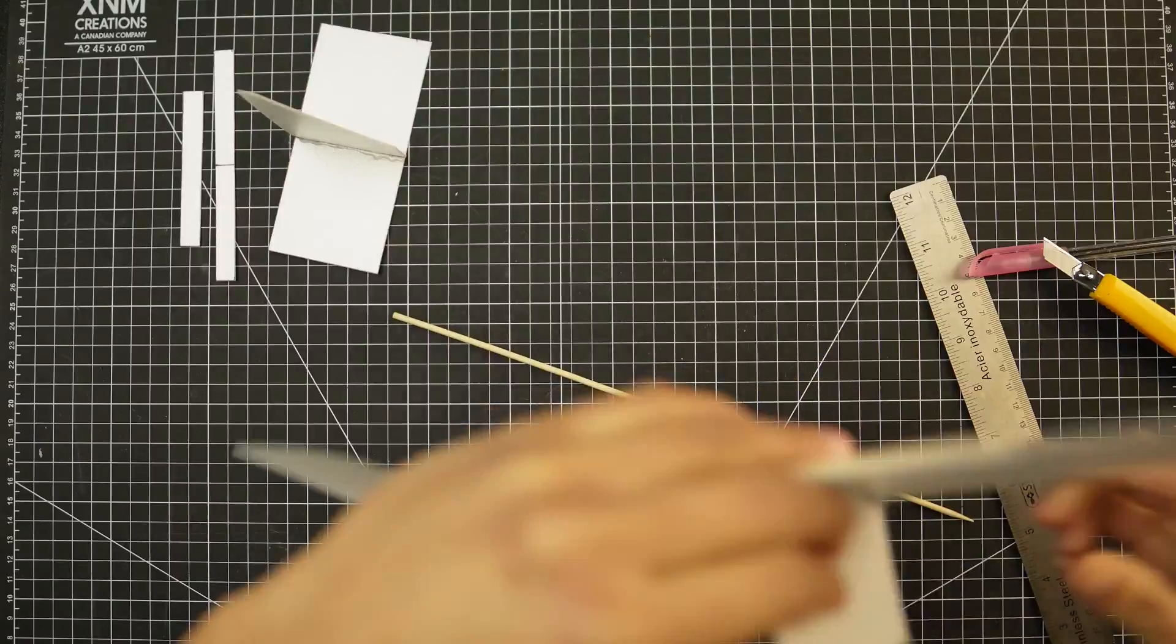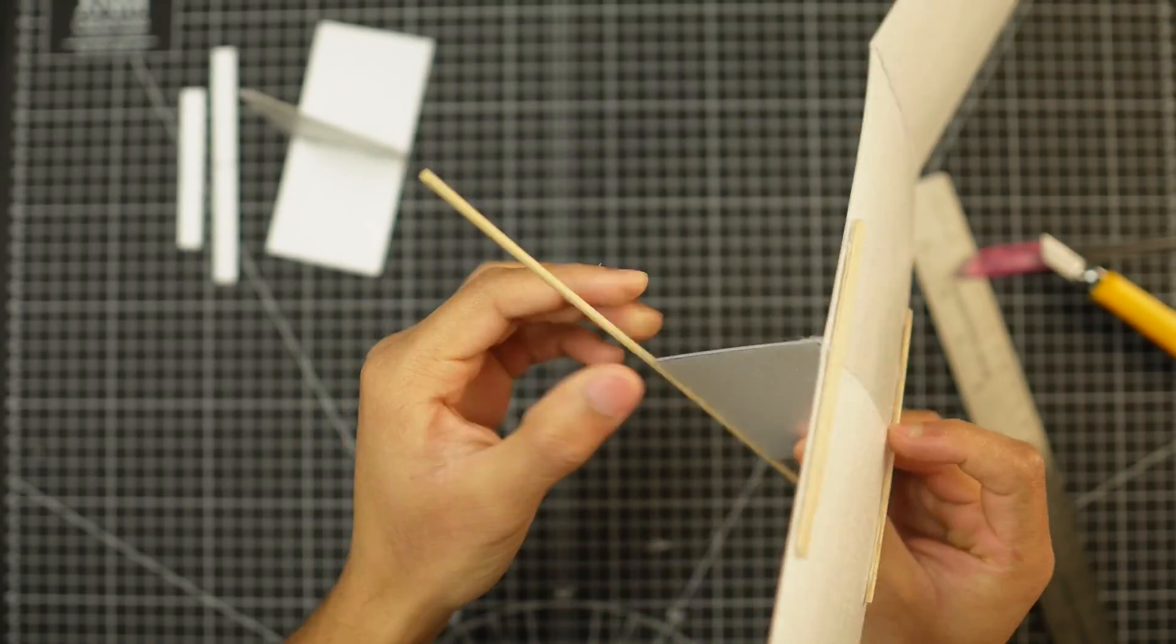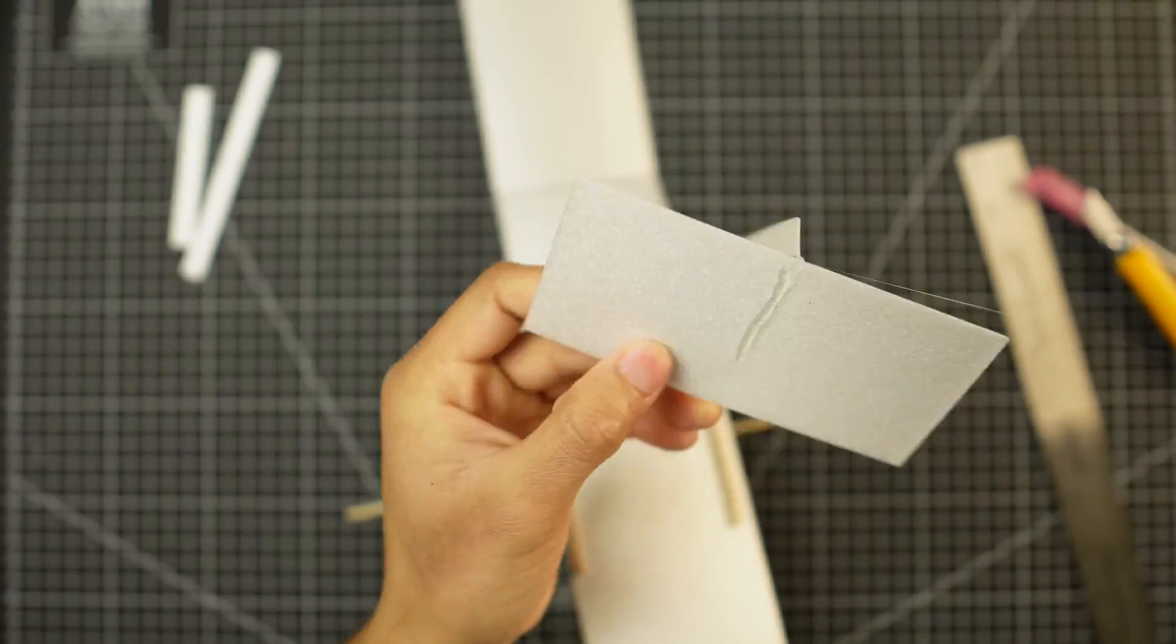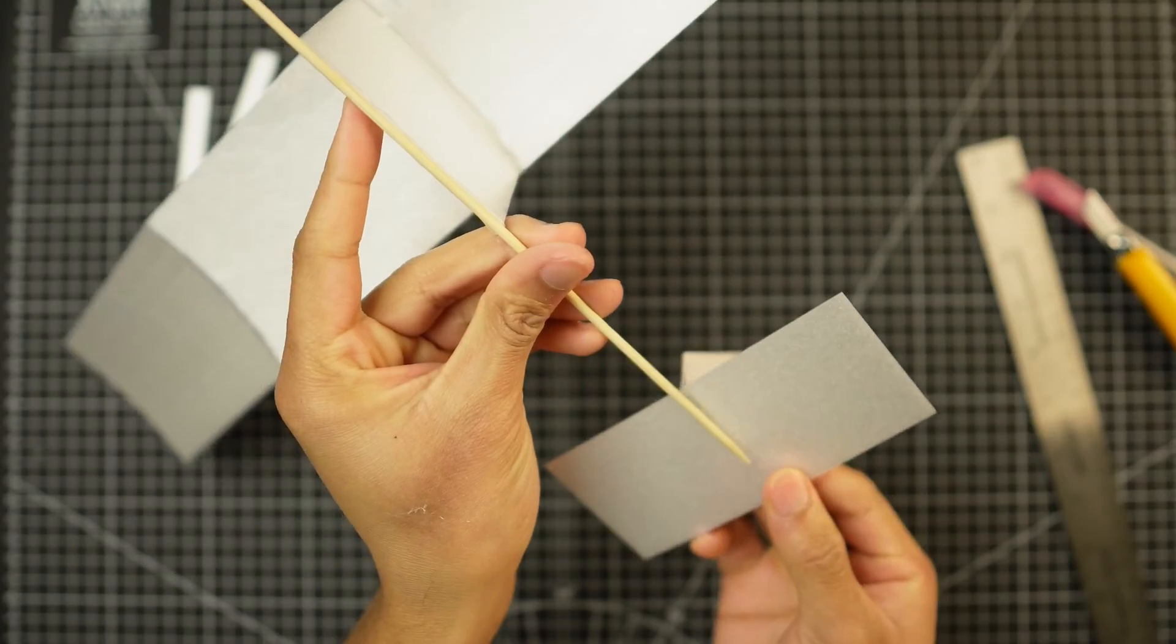At this point, you're ready to stick the wing onto the fuselage which is just a piece of barbecue stick. Once you attach the wing, you are also ready to attach the tail at the back.